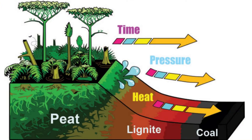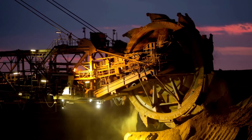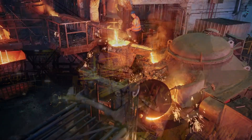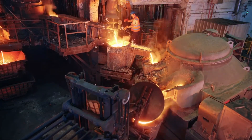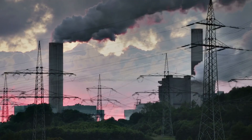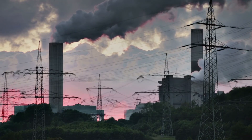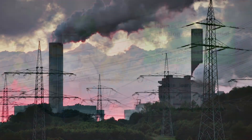As coal contains mainly carbon, the slow process of conversion of dead vegetation into coal is known as carbonization. Coal is extracted from the earth's surface by mining. It is mainly used to generate electricity, and in households and industries to accomplish various tasks. The iron and steel industry depends highly on fossil fuels to generate electricity.